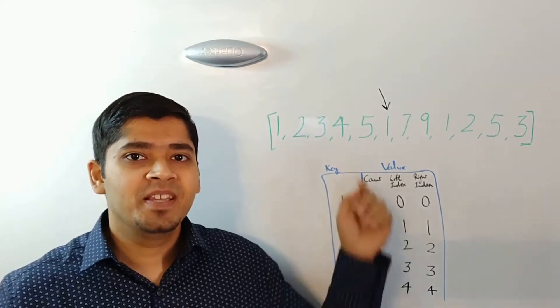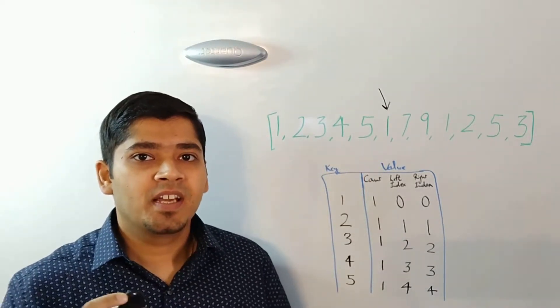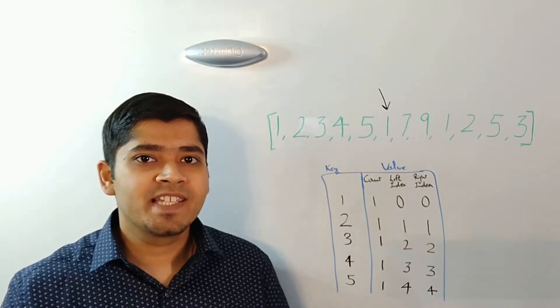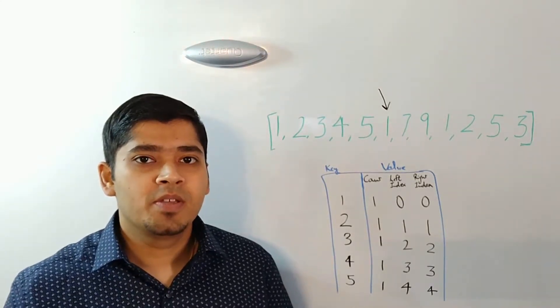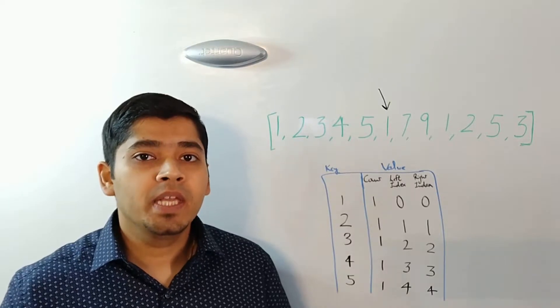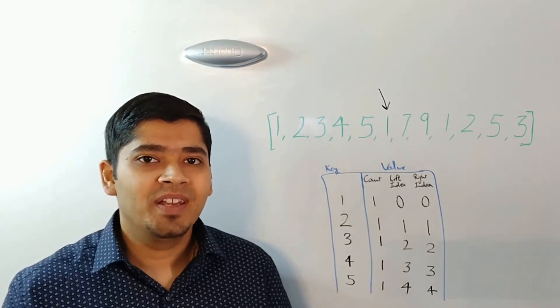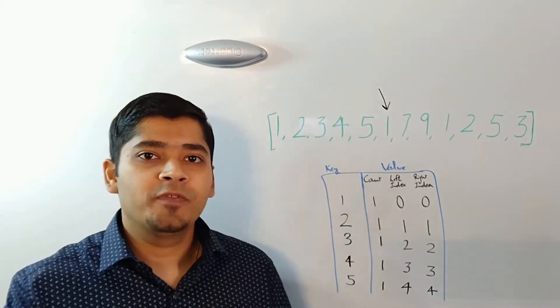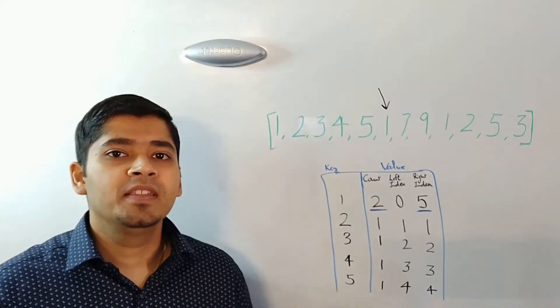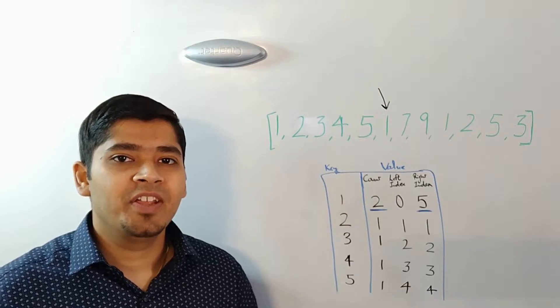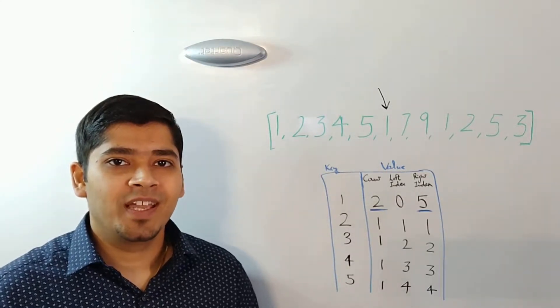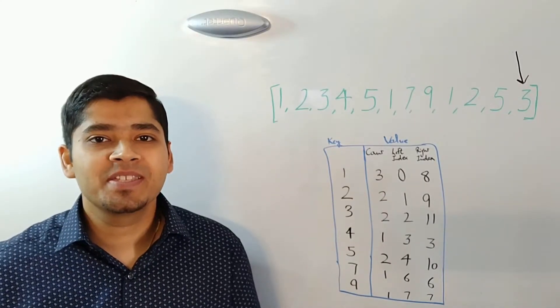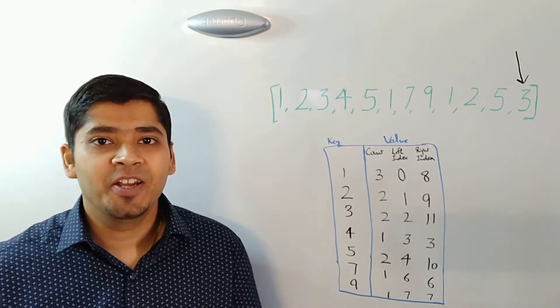Next comes this 1 and the key 1 already exists in the hash map. So what do we do? We increment the count by 1 and we update the right index to whatever is the index of this new 1. This is how the updated entry for key 1 will look like. We keep doing the same thing until the end of the array.